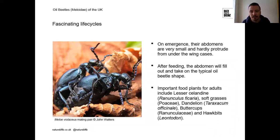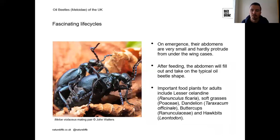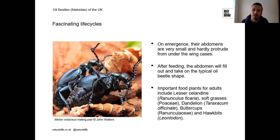Oil beetles have a fascinating life cycle. It begins when adults emerge — for some species this is in spring, for others in autumn and winter. When they first emerge, their abdomens are very small and hardly protrude from under the wing cases, making them most likely to be confused with other beetle species. Once they start feeding, their abdomen fills out and takes the typical oil beetle shape.